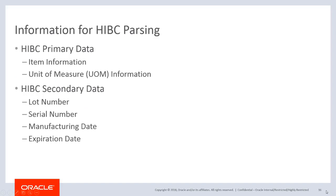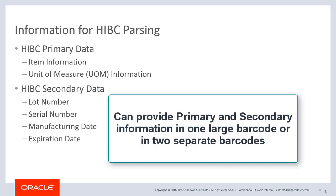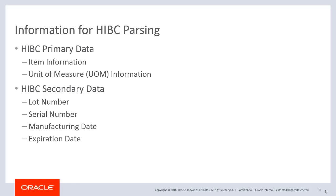HIBC item information can provide an item's primary and secondary information in one large barcode or in two separate barcodes. If two separate barcodes are used, the first barcode is a primary unique device identifier. The second barcode provides production information with specific attributes of that particular production quantity, lot, or both, for the item. All HIBC barcodes begin with a plus sign.